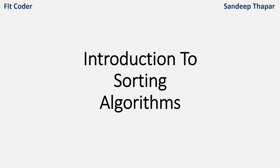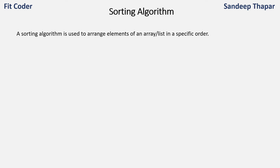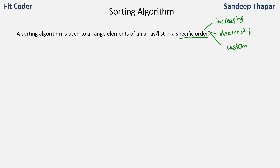Hi everyone, from this video we are starting a new series about sorting algorithms. A sorting algorithm is used to arrange elements of an array or a list in a specific order. This specific order can be increasing, decreasing, or any custom order which the user can define. Basically, we are arranging elements based on some predefined order, and the algorithm used to perform that operation is known as a sorting algorithm.